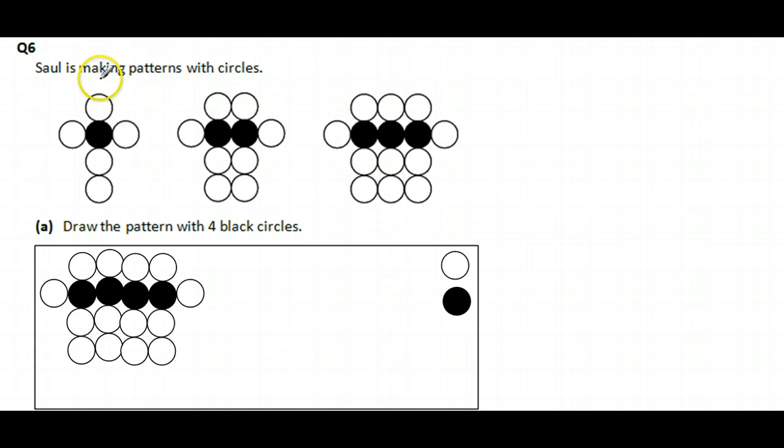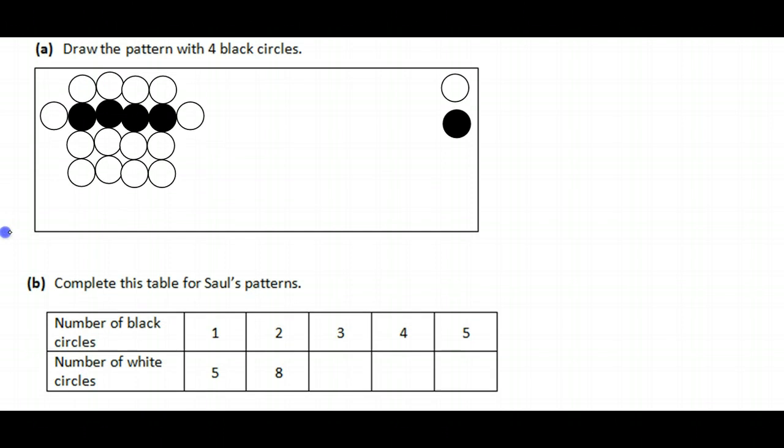In pattern number one we've got one strip. In pattern number two we got two strips. Pattern number three we got three strips. In pattern number four we got four strips, not forgetting the two little arms we started with.